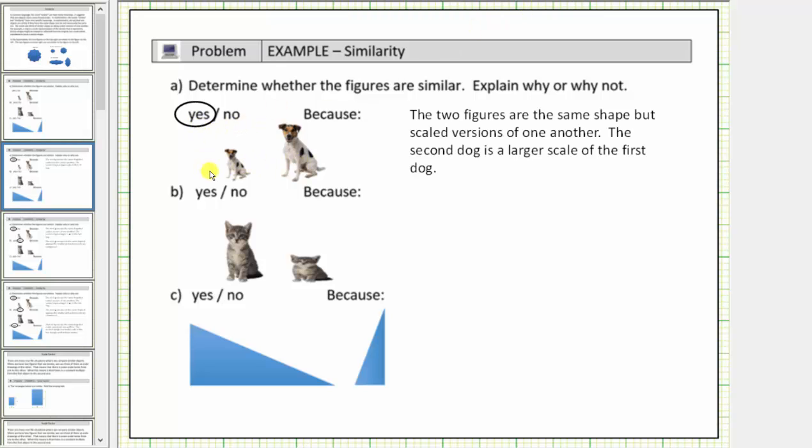And therefore we say yes, the two figures are similar because the two figures are the same shape but scaled versions of one another. The second dog is a larger scale of the first dog.